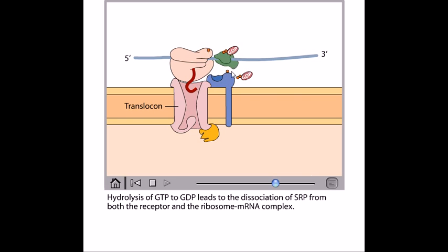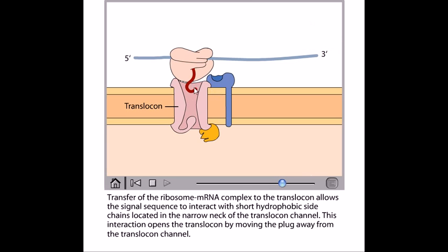Now hydrolysis of GTP to GDP leads to the dissociation of the SRP from both the receptor and the ribosome mRNA complex. The transfer of ribosome mRNA complex to the translocon allows the signal sequence to interact with the short hydrophobic side chain located in the narrow neck of the translocon channel.